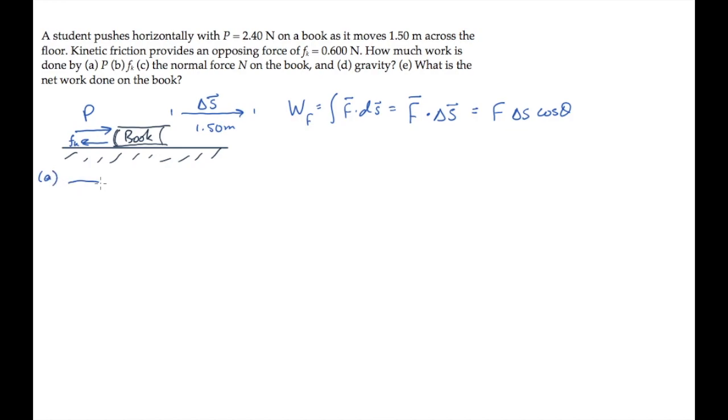In part A, we're asked to find the work done by the pushing force P. That force is directed to the right, the displacement is to the right, so the angle theta between them is 0. The work done by the pushing force is the magnitude of the force times the magnitude of the displacement times cosine of the angle theta. Substituting numbers along with cosine of 0 equals 1 gives us 3.60 joules.